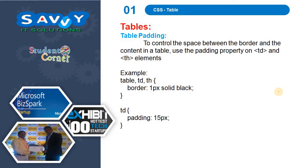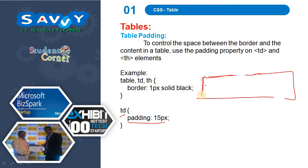Next, table padding. To control the space between the border and the content in a table, use the padding property on td and th elements. Cell spacing and padding are concepts explained in the HTML table topic — going through that will give more meaning. Here we are giving a padding of 15px, so this space will occur for every td cell.